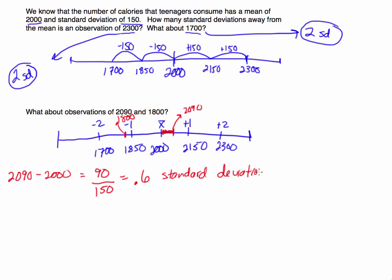What we just calculated is a z-score. Z-scores are telling you the number of standard deviations away a particular value is from its mean. So 2,090 — when I ask you how far is it from the mean in terms of standard deviations — that's the z-score. I knew it was going to be less than 1 because 1 standard deviation away was 2,150, and 2 standard deviations was 2,300.